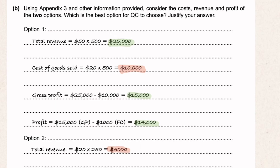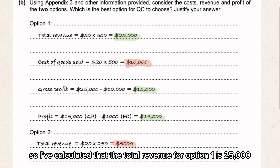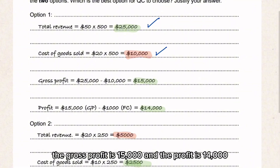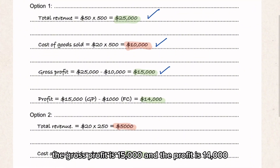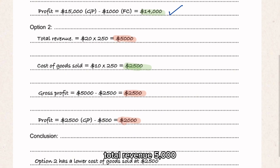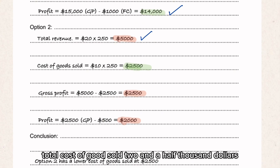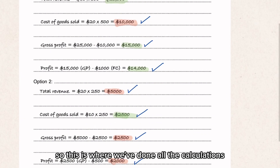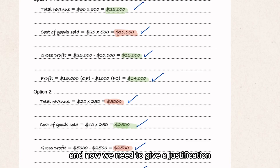I've calculated that for option one: total revenue is $25,000, total costs are $10,000, gross profit is $15,000, and net profit is $14,000. For option two: total revenue is $5,000, total cost of goods sold is $2,500, gross profit is $2,500, and net profit is $2,000. Now that all calculations are done, we need to give a justification and select the best option.